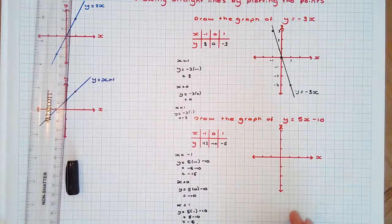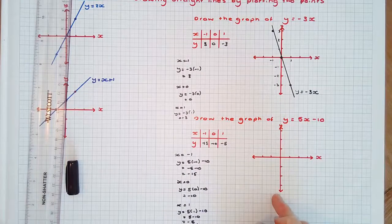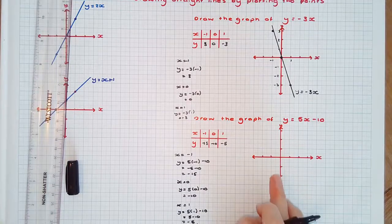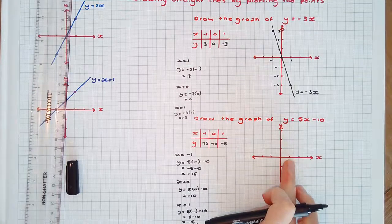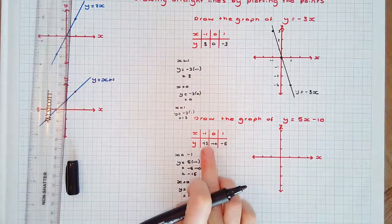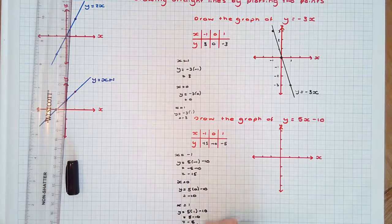It's not necessary to use the same scale on the x and the y axis. To save space, it's probably helpful here to use a scale of 1 cm to represent 5 units, as the y values change by 5 with each unit change in x.